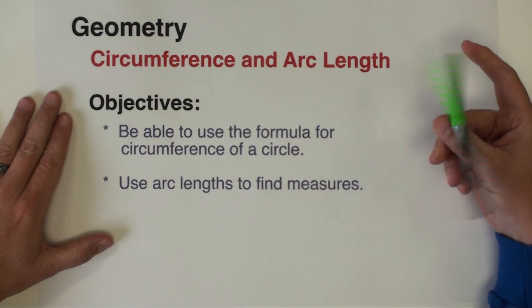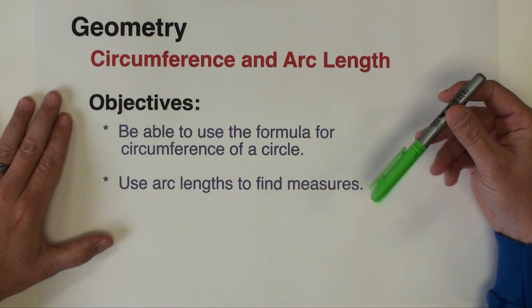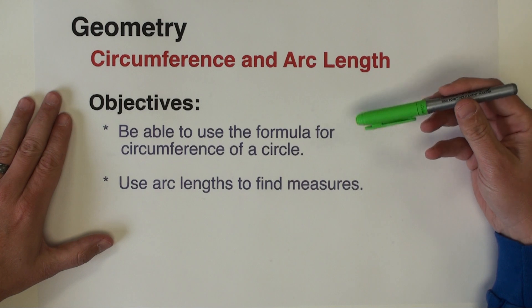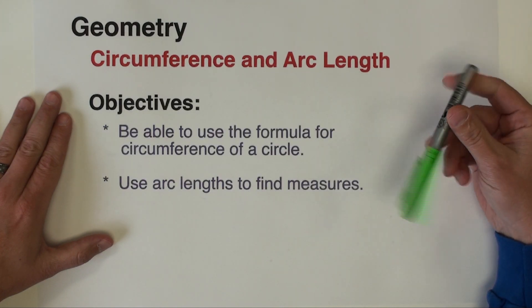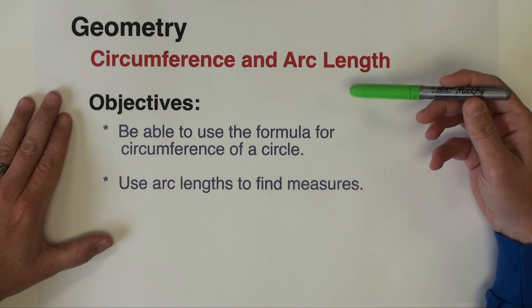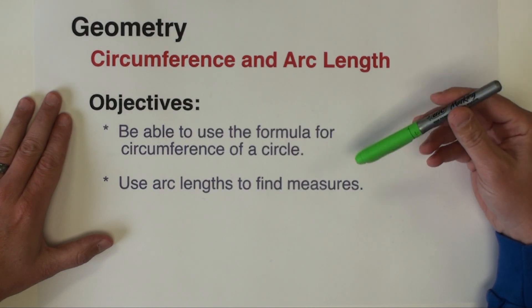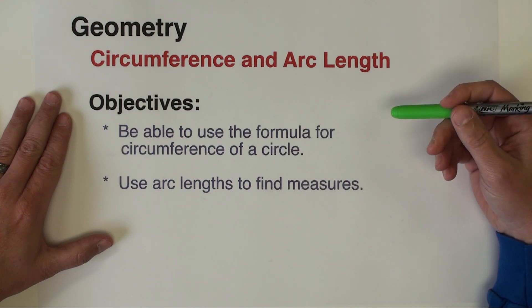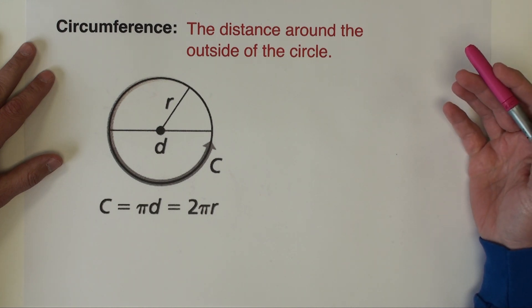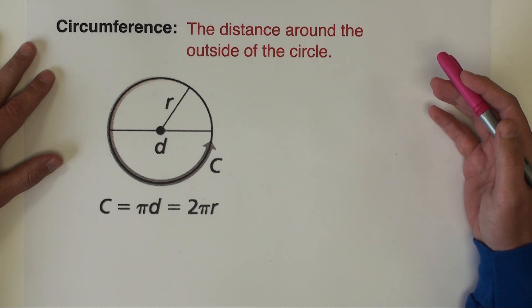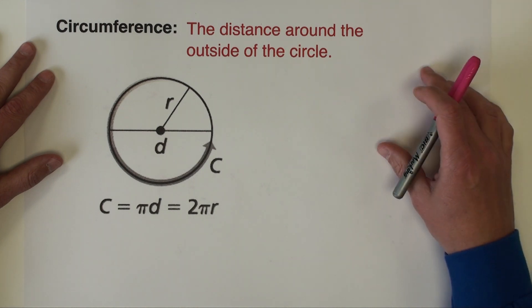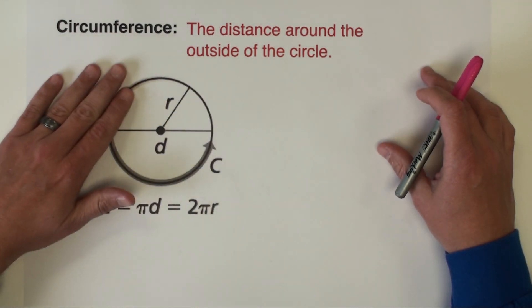Hello everyone and welcome to another math tutorial. This video is going to be the first in a series of videos that will explore area and volume as we eventually make it into three-dimensional solids. We're going to begin this series with a discussion of circumference and arc length of circles — something everybody should have some familiarity with before reaching this point in geometry.